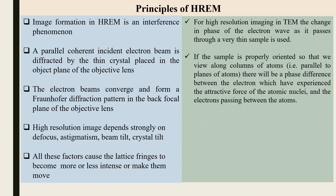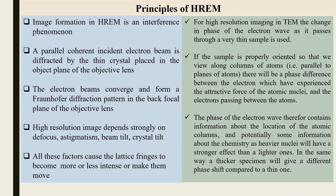For high resolution imaging in TEM, the change in the phase of the electron wave as it passes through a very thin sample is used. If the sample is properly oriented so that we view along columns of atoms — parallel to the planes of atoms — there will be a phase difference between electrons that have experienced the attractive atomic nuclei and electrons passing between atoms. The phase of the electron wave therefore contains information about the location of atomic columns and potentially chemistry, since heavier nuclei have a stronger effect than lighter ones, and a thicker specimen gives a different phase shift compared to a thin one.